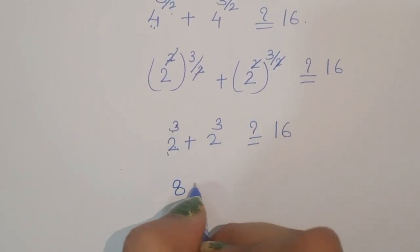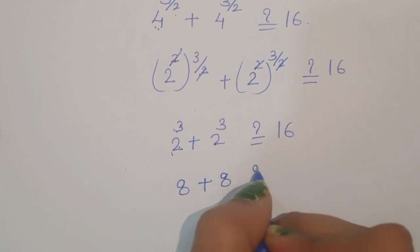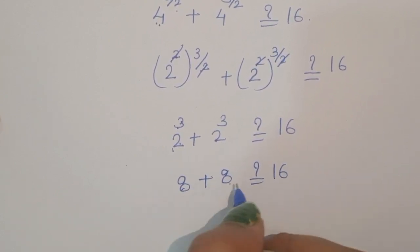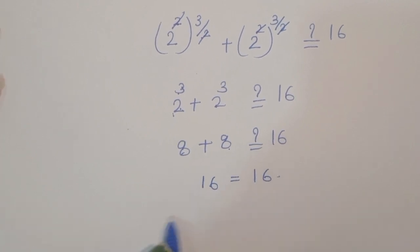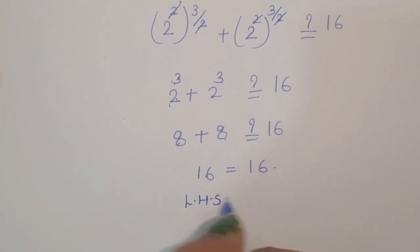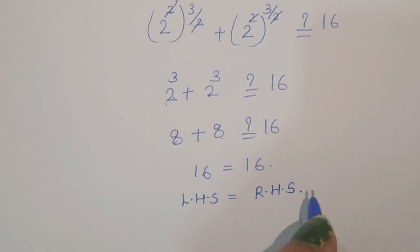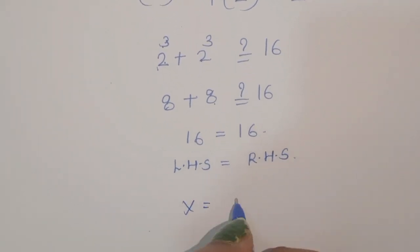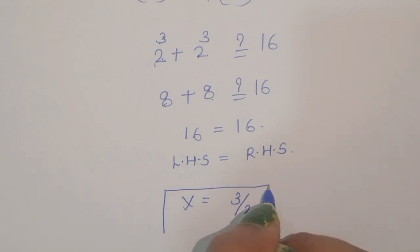2 power 3 is 8, so 8 plus 8 equals 16. LHS is equal to RHS. Therefore, the value of x is equal to 3 by 2. This is the correct solution.